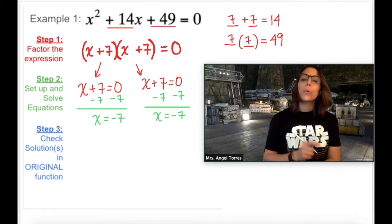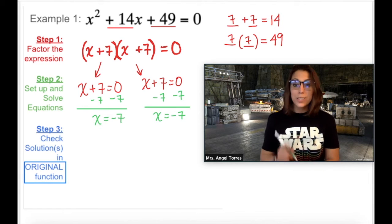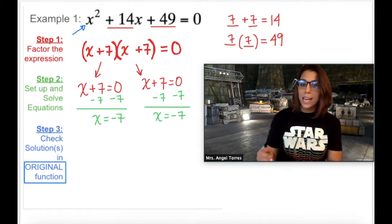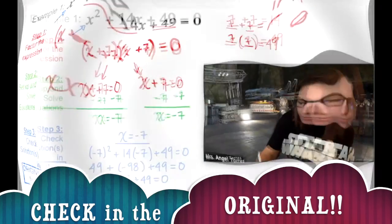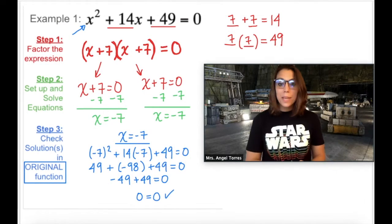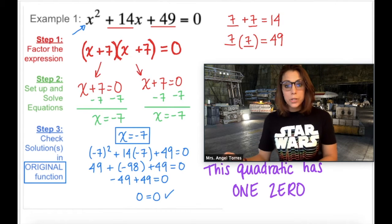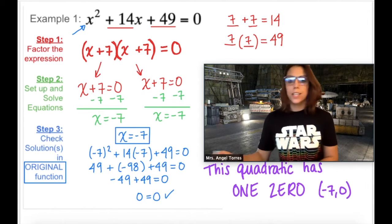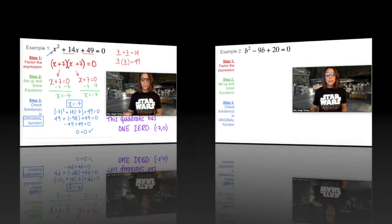Let's check it just to be sure. Now here's the catch. When you're checking, you always want to check in your original function. So you don't want to check it into the function that you created, because there's a chance that you did your math wrong. That means we're checking in the standard form. So let's go ahead and substitute in negative 7. And 0 equals 0. So it appears negative 7 is correct. So what does that mean? This means that the quadratic has one zero, and that only zero is at negative 7, 0. In this case, the vertex and the zero are the exact same point.